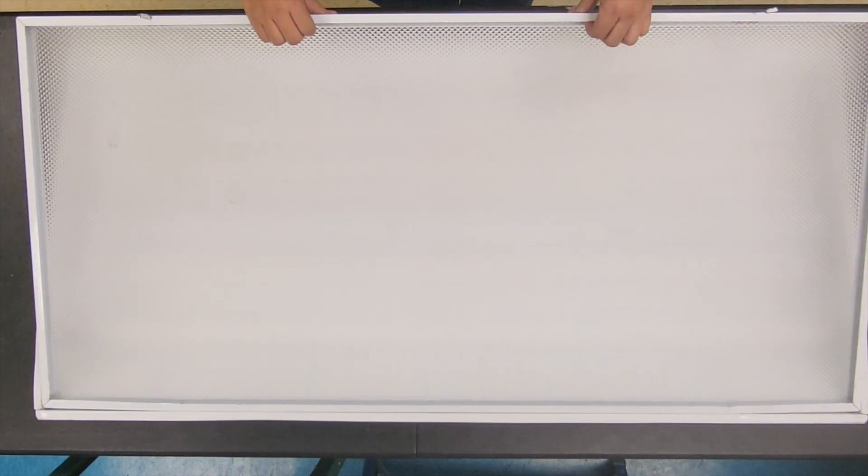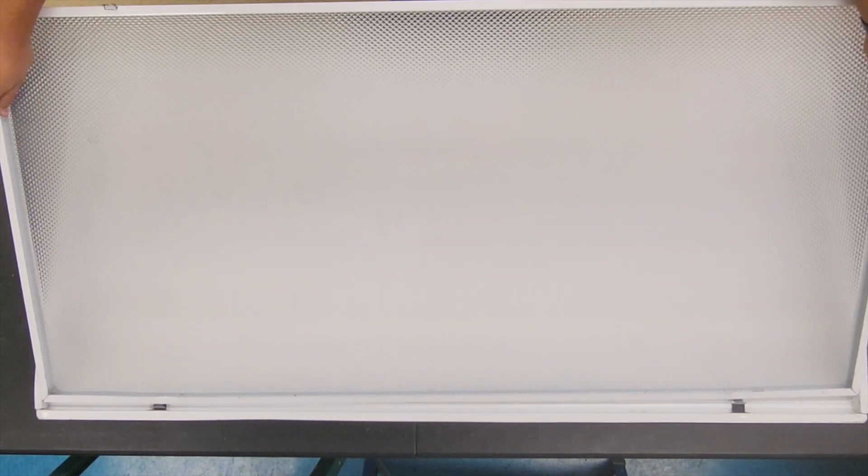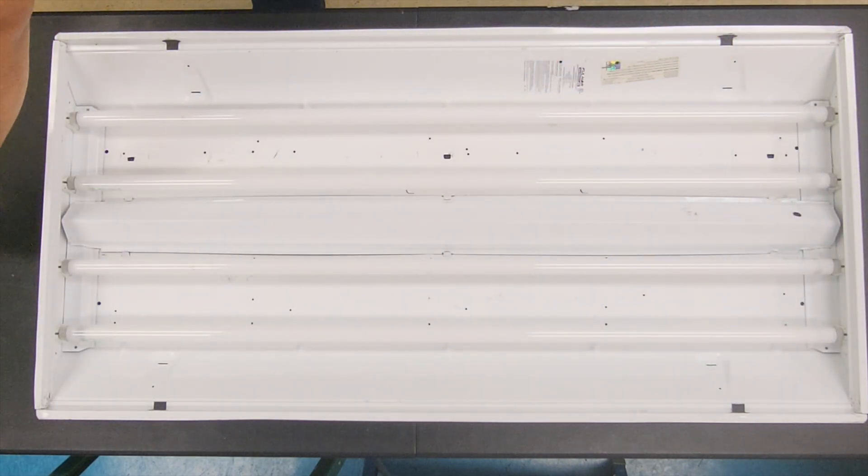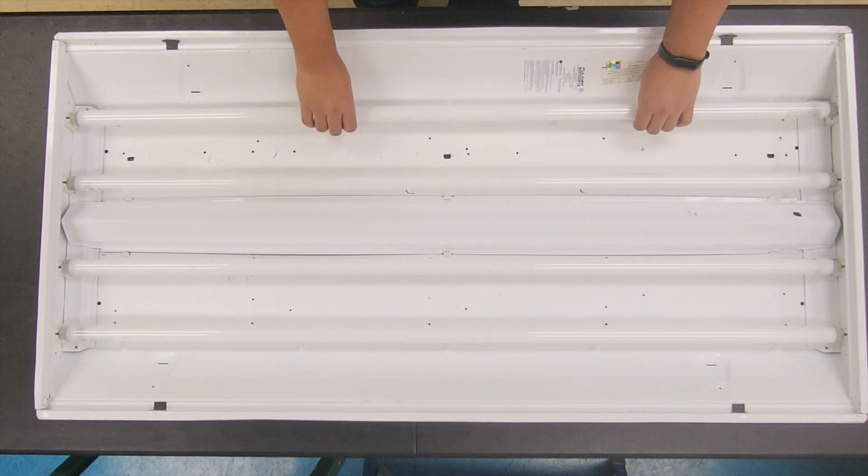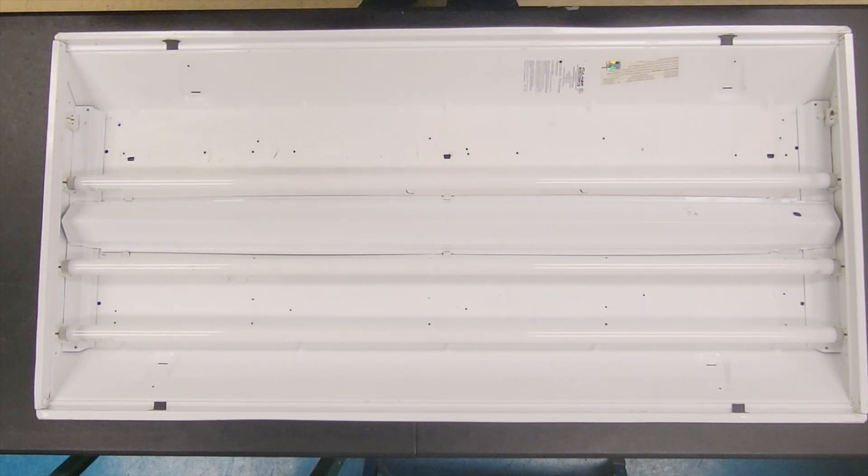First, we will begin by removing all of the old components from our existing luminaire. This is going to include the lens, any lamps, center channel, ballast, and lamp sockets that may be in the current fixture.